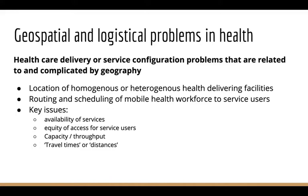This might, for example, be about the location of health delivering facilities — hospitals in general, or different types of health delivering facilities. When healthcare is about delivering to patients in their own home, this is largely what we call a routing and scheduling problem, where mobile health workforce are sent out to visit patients. A key issue is the availability of services, which may be affected by shift work, and a major concern in public health is equity of access for service users — it's a poor system where vulnerable individuals have poor access relative to another group.